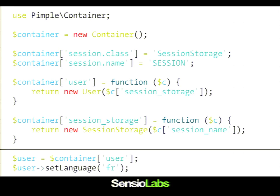In Pimple, you configure the container via anonymous functions. Then using the user is as simple as it can get — as simple as before when we were not using dependency injection. I say: I want the user from the container, and I don't care about how this user needs to be created, its dependencies, or how to configure it. I just want to work with the user object. The user in the container is defined as an anonymous function — it creates a user, injects the session storage, and the session storage is created and injected with the session name. First step: configure the dependency injection container; then use the container.